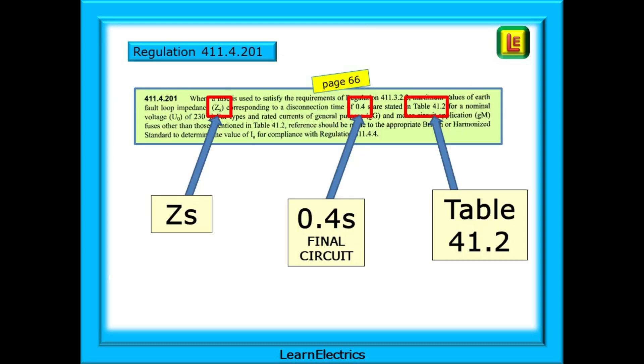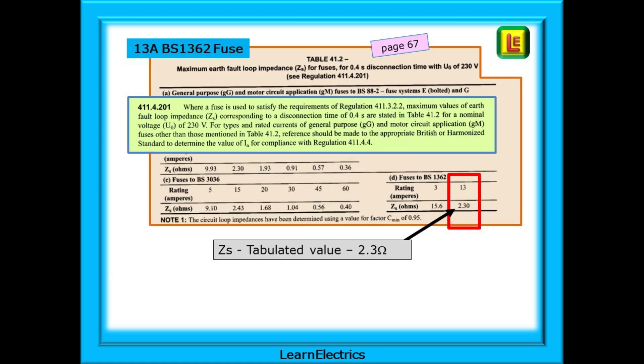Regulation 411.4.201 on page 66 of the Brown Amendment 2 regs book gives us the information that we need. The ZS for final circuits protected by fuses requiring a 0.4 second disconnection time will be found in table 41.2, and we will find this table on page 67. Here is table 41.2 and shown in the red box is the maximum tabulated ZS value for a 13 amp BS 1362 fuse. This is 2.3 ohms and will need to be converted to a maximum permitted measured value to compare with our on-site readings with a test meter.